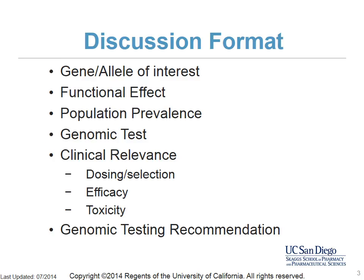Within each therapeutic area, we will include the following: the gene or allele of interest, the functional effect of the gene or allele, the prevalence of the relevant alleles in various populations, the available genomic tests, a summary of the most significant clinical data regarding drug dosing and selection, drug efficacy, drug toxicity, and recommendations for genomic testing from reputable agencies or national guidelines.